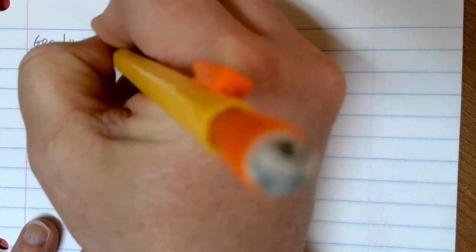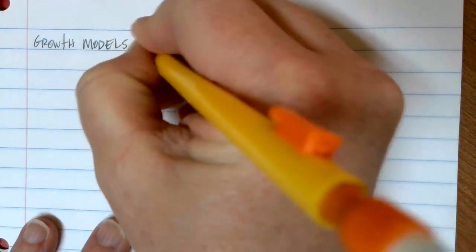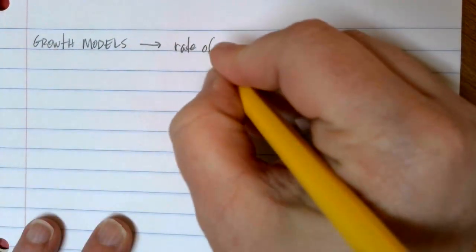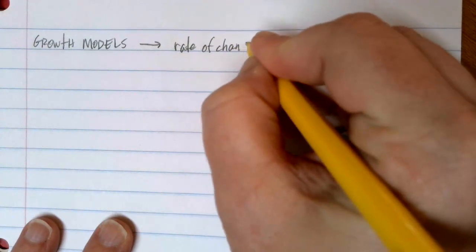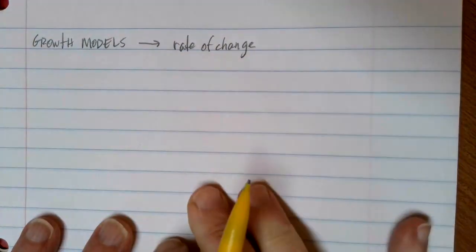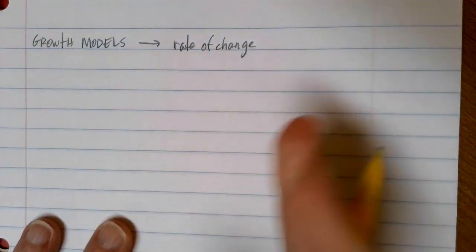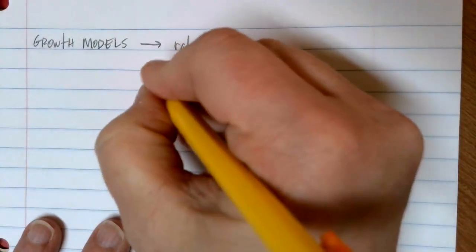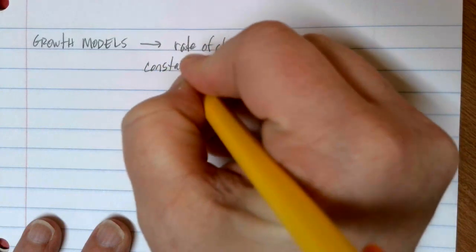As we start our conversation about growth models, probably the most important characteristic that we have to pay attention to is the rate of change. We're trying to see how something's growing, how something's changing. And the way that something changes influences the way that we can figure out what's going on for any given problem. In this lesson, we're going to focus on constant numbered rate of changes.